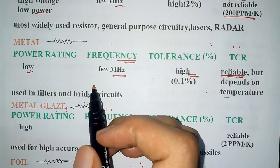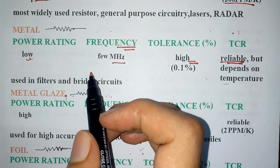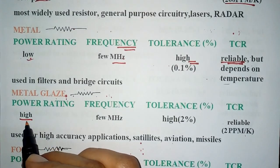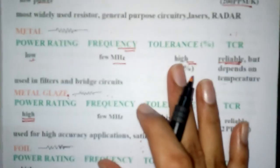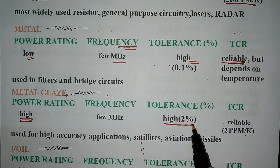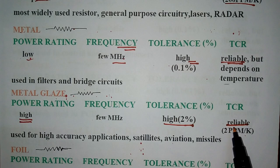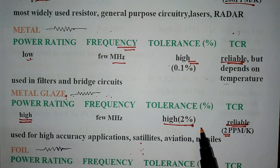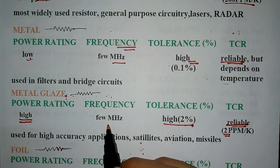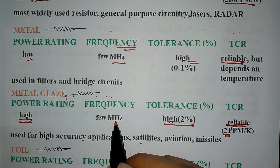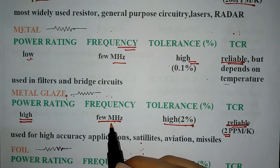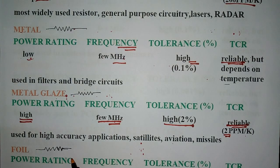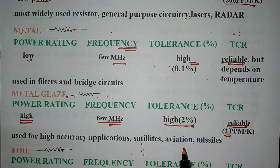Next comes metal glaze resistor. It is similar to the previous two, but it has high power rating, high tolerance and highly reliable TCR of 2 ppm per Kelvin, which makes it more accurate. It is one of the most accurate resistors. Its frequency stability is good. It is used for high accuracy applications like in aviation, missiles, satellites, etc.